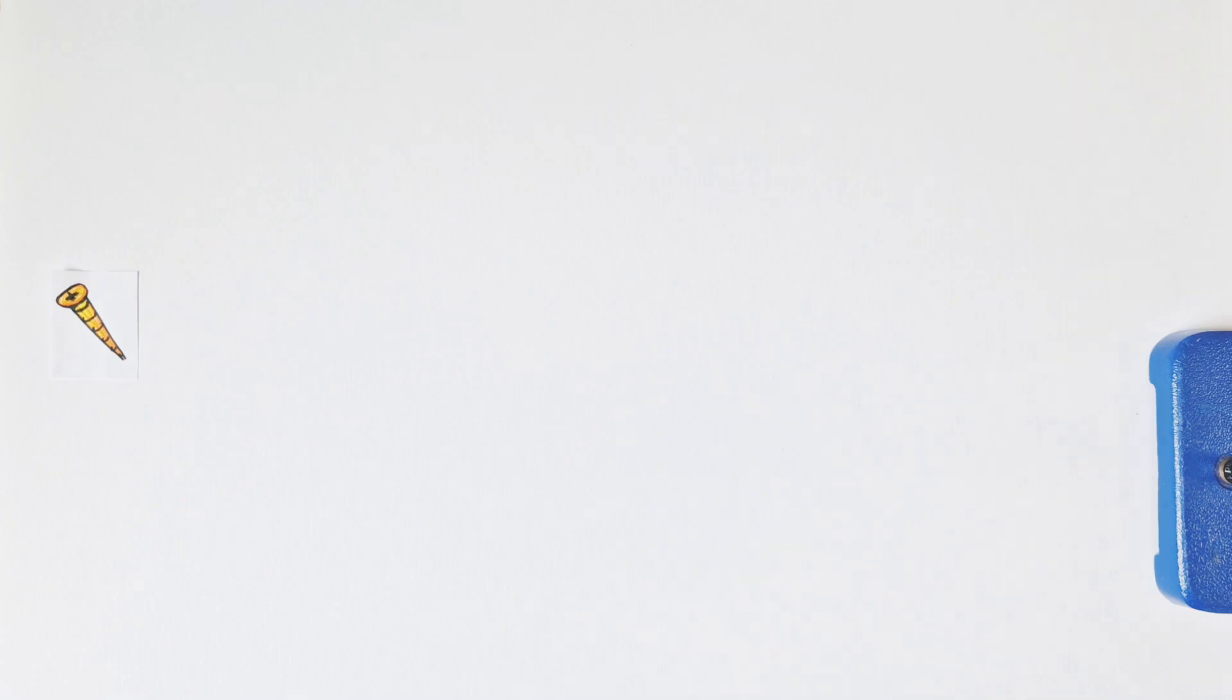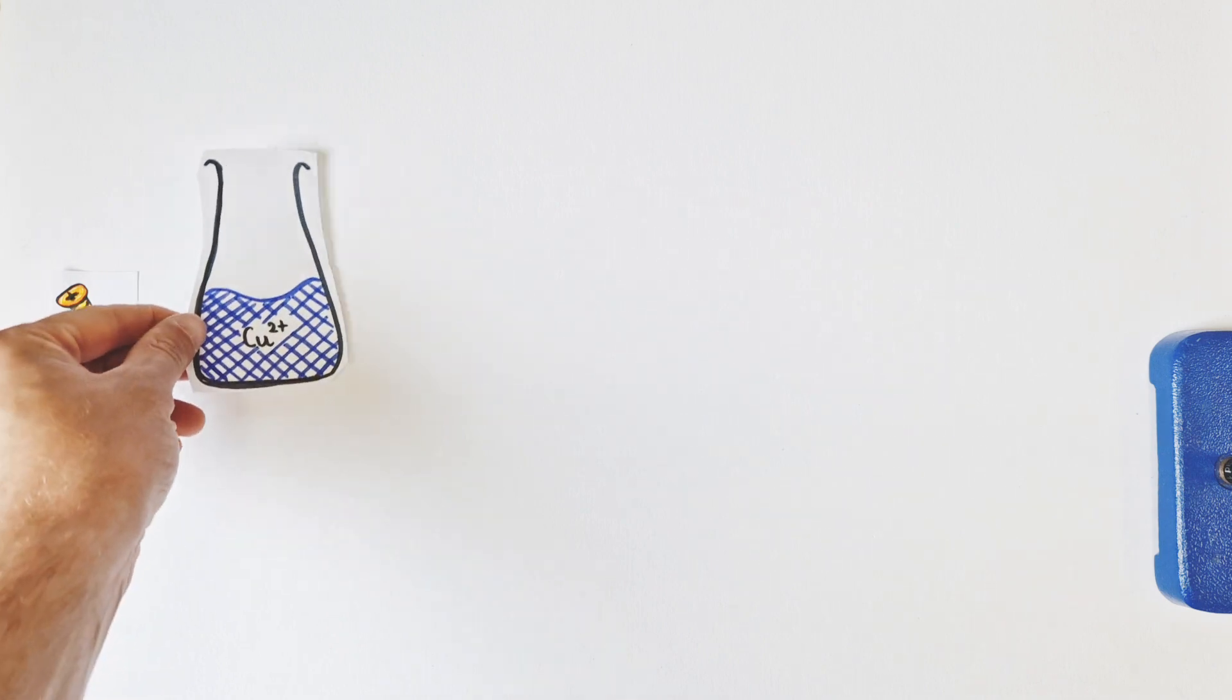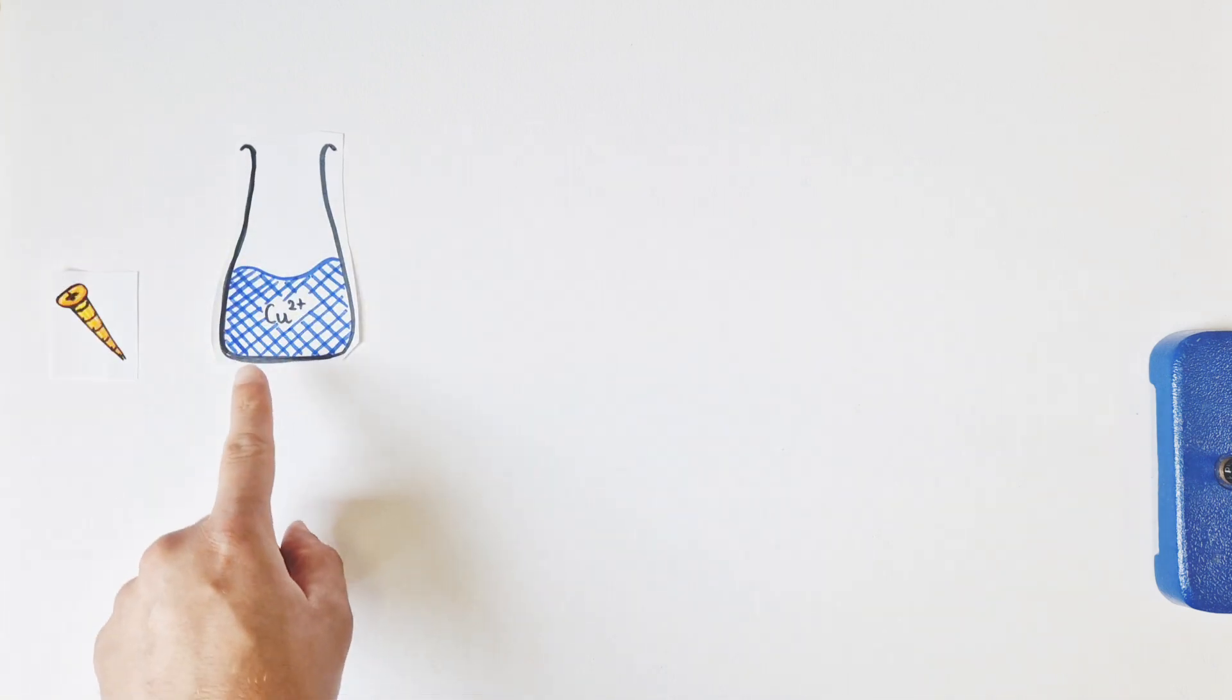Our first objective was to remove the copper from this brass nail. The best way to do this, because brass is an alloy of copper and zinc, is to react this brass nail with concentrated nitric acid. This will produce a solution of copper 2+ ions, which will be beautiful and blue and look like this.